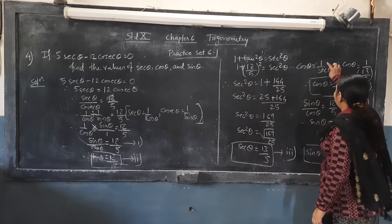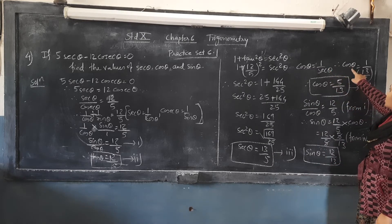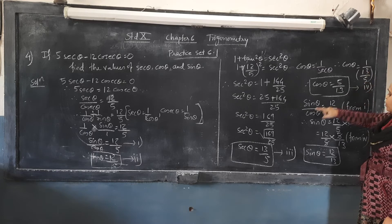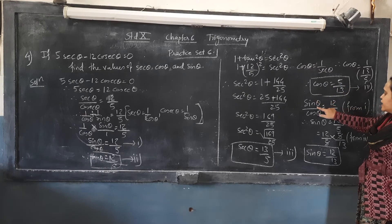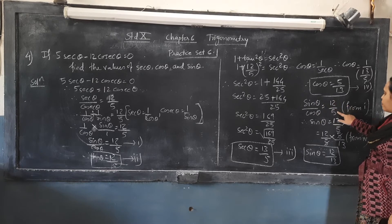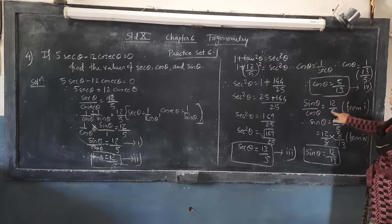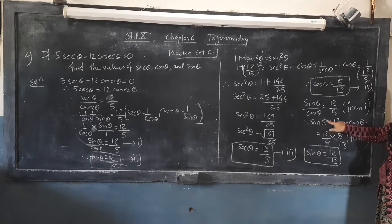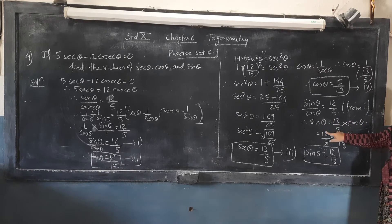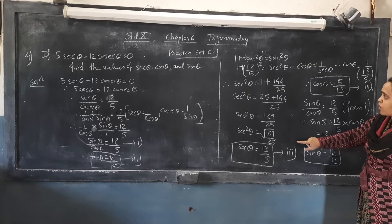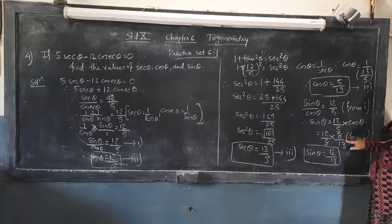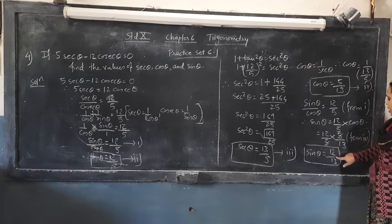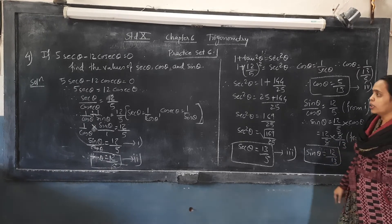cos θ equals 1 upon sec θ — this is the interrelation. So cos θ equals 1 upon 13/5, which gives cos θ equals 5 upon 13. This is statement 4. Now from statement 1, sin θ upon cos θ equals 12 upon 5, so sin θ equals 12/5 into cos θ. The value of cos θ is 5 upon 13, so the 5s cancel and sin θ equals 12 upon 13.